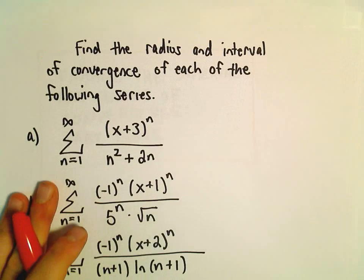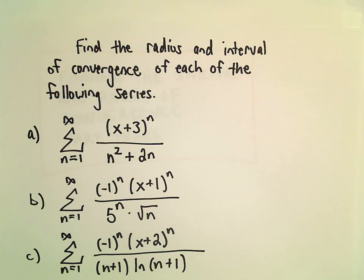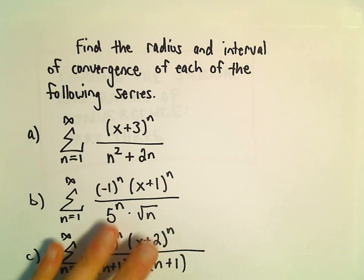Alright, here we're going to look at some more examples of finding the radius and interval of convergence for some series. So, part A here, we've got the series from 1 to infinity, x plus 3 to the n over n squared plus 2n.